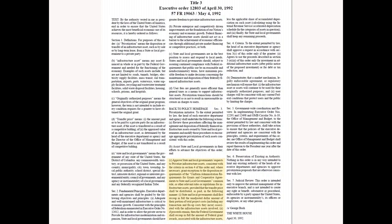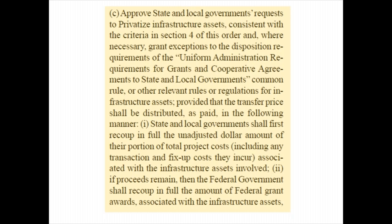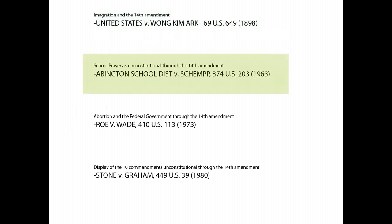Look at Executive Order 12803: it privatized United States infrastructure and its assets, state and federal — every road, bridge, school, everything's for sale. Our country's being sold out from underneath us. I can't tell you how these court cases would have been decided differently under the Republic form of government, but I do know they would be decided differently because they were based on the 14th Amendment. Such cases as eminent domain, immigration, taking prayer out of school, abortion, can't post the Ten Commandments in public — it's unconstitutional. All of those are based on a 14th Amendment jurisdiction. The states would have ruled on them, some states differently than others. They're supposed to be sovereign republics.